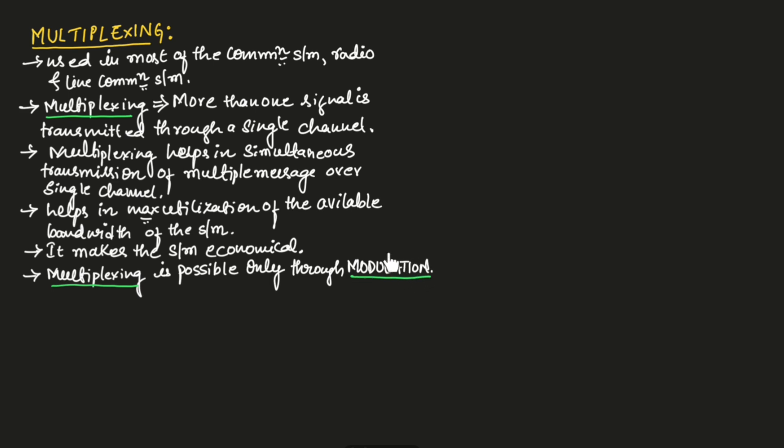The multiplexing of signals is possible only through the process of modulation. Through modulation, we can transmit multiple messages over a single channel. So for multiplexing, we will be using modulation.